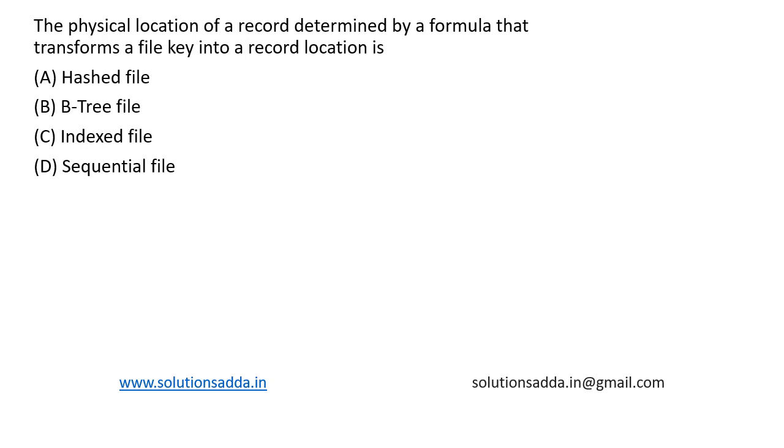For example, using the hash function, suppose h(k) = k mod 7. This particular key can be inserted into a particular location based on this formula. Suppose we have a key or a record that has a value.